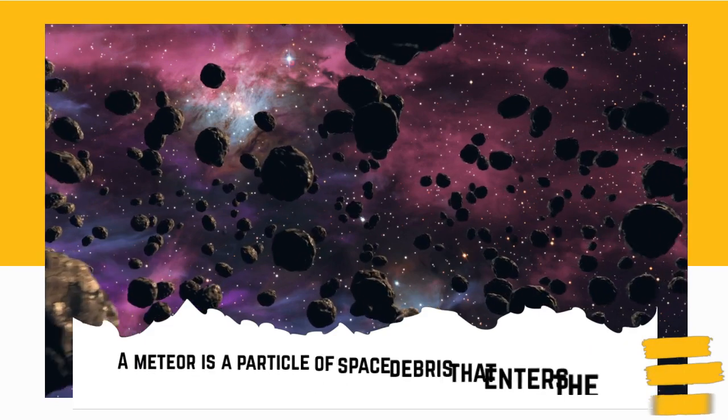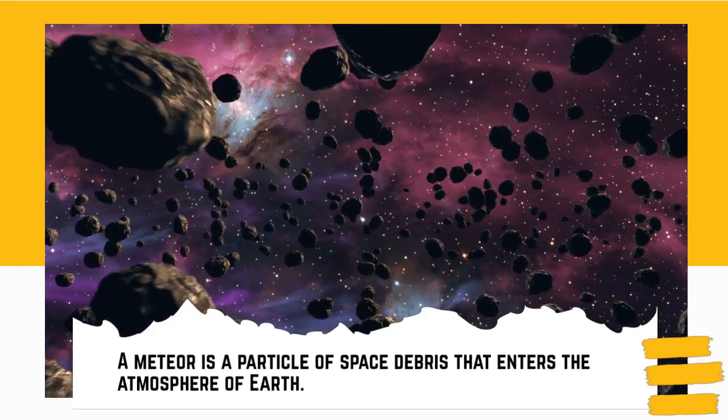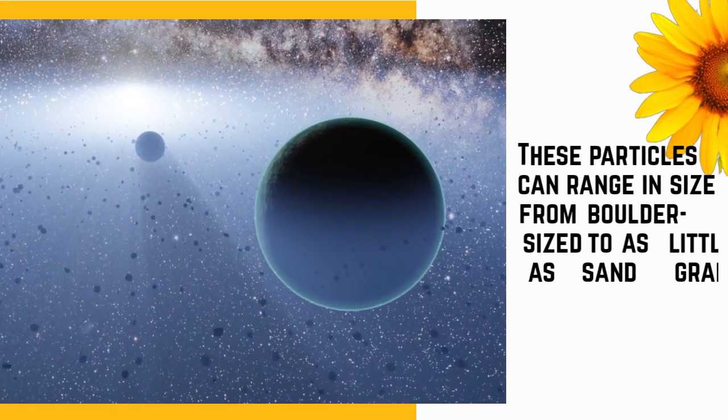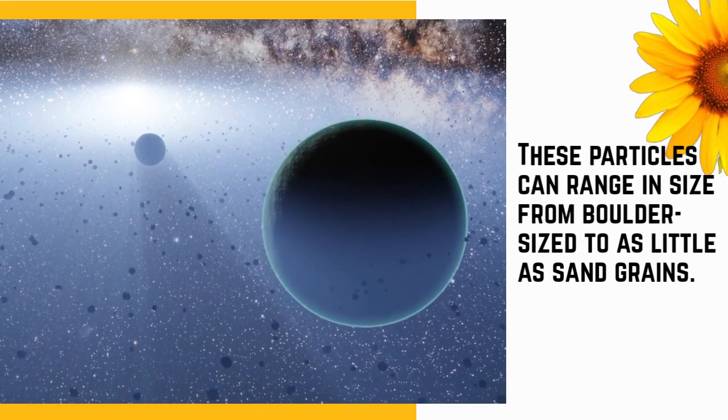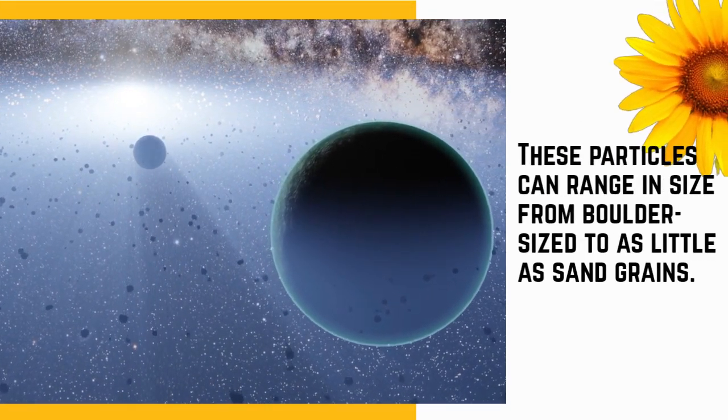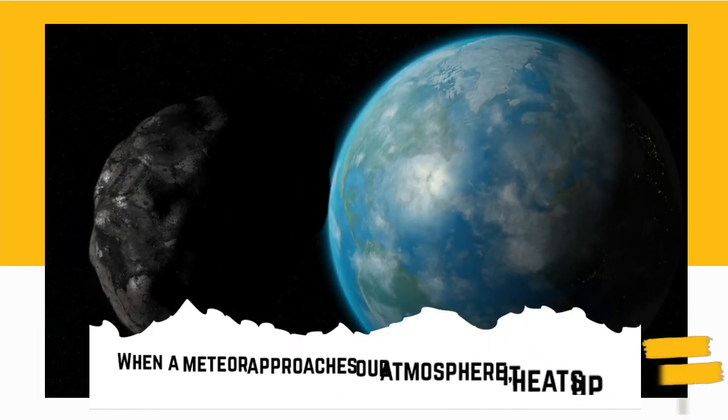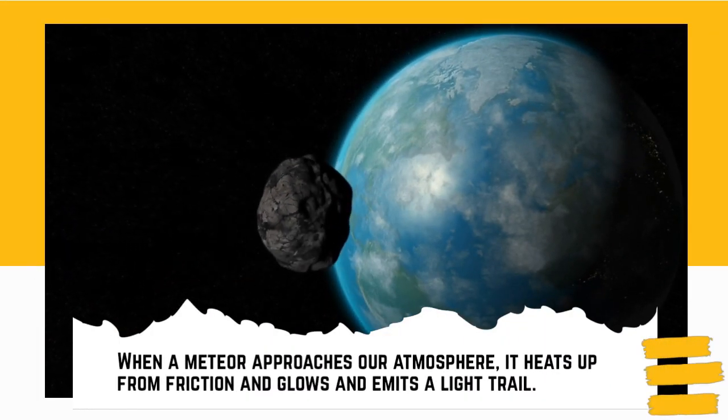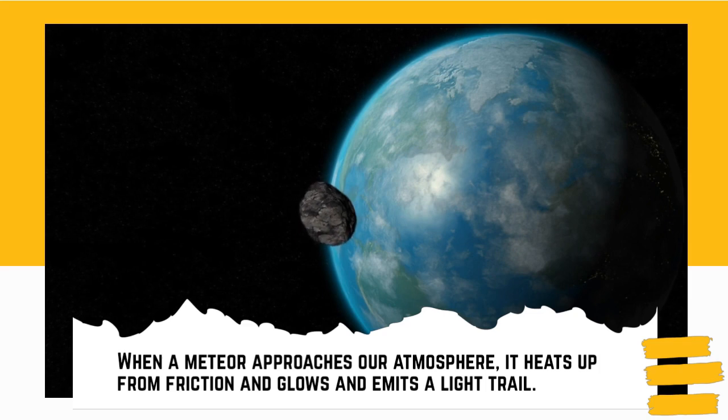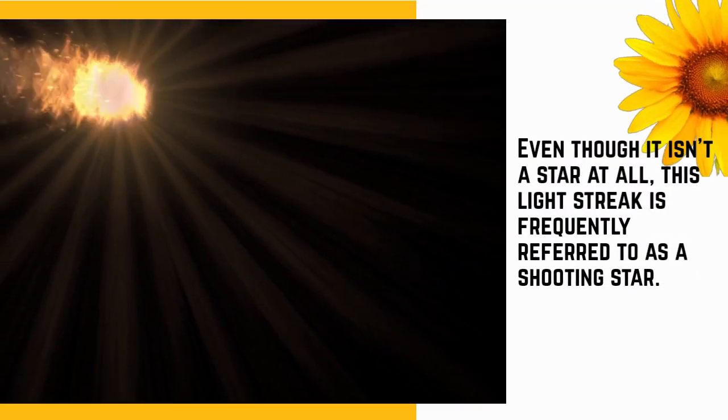Interesting facts about meteors. A meteor is a particle of space debris that enters the atmosphere of the Earth. These particles can range in size from boulder-sized to as little as sand grains. When a meteor approaches our atmosphere, it heats up from friction, glows, and emits a light trail. Even though it isn't a star at all, this light streak is frequently referred to as a shooting star.